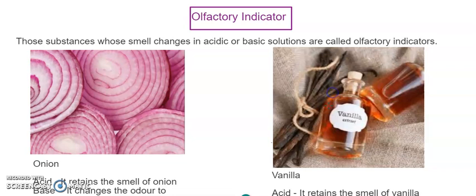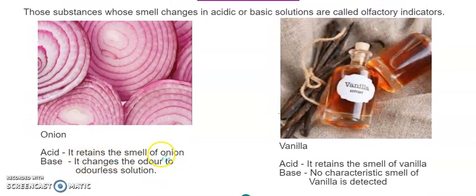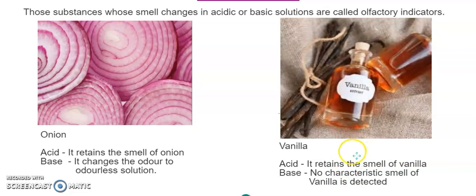Olfactory indicators — olfactory means smell. These indicators, when added, change the smell of the solution. One is onion juice and the other is vanilla. Onion juice retains its distinct smell when acid is added to it, but if it is a base, the smell disappears. Same with vanilla — when vanilla is added to an acid, the smell retains; add it to a base and the smell goes off. Indicators that help identify acid and base based on smell, not color change, are called olfactory indicators.